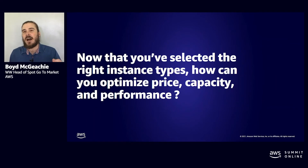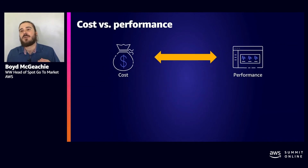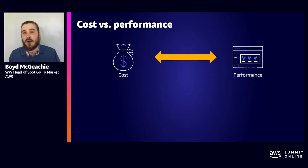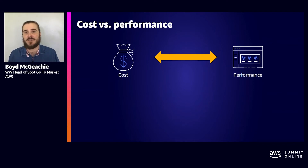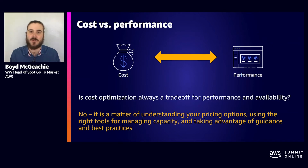Now we've given you a list of instance types that meet the performance characteristics of your application, so you've done the most important part first — starting by being flexible and finding all the options. Now is the time to start thinking about how to optimize for price, capacity, and performance. When it comes to the cloud, you don't necessarily need to think there is a tradeoff between cost and performance. Very often, when we launch new instance types, they have better performance than the previous generation and are actually cheaper as well. By following best practices, we're trying to optimize for both.